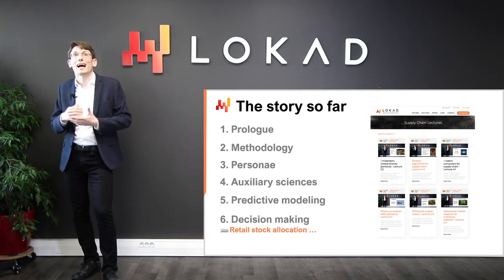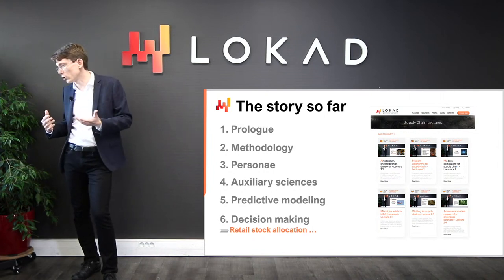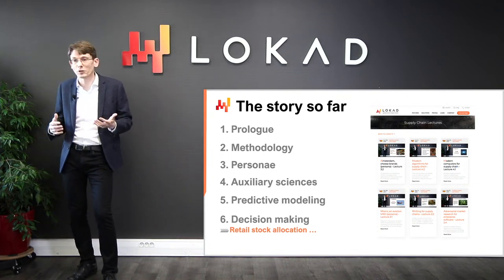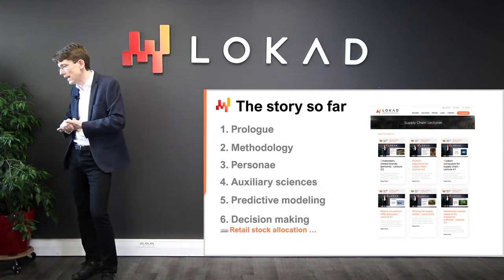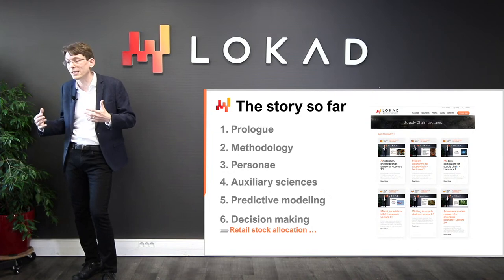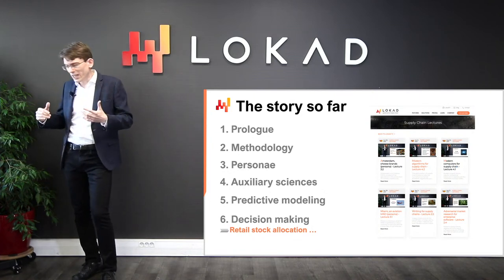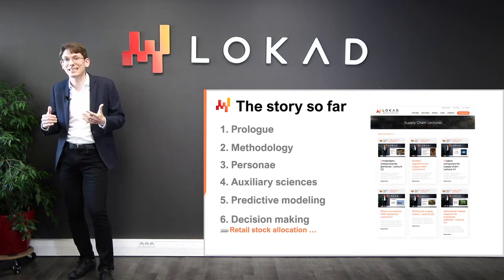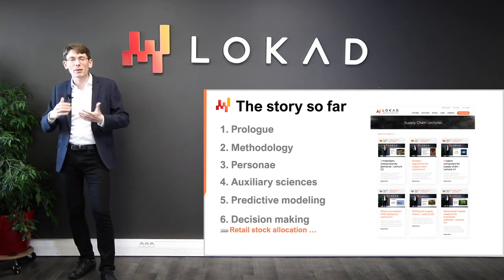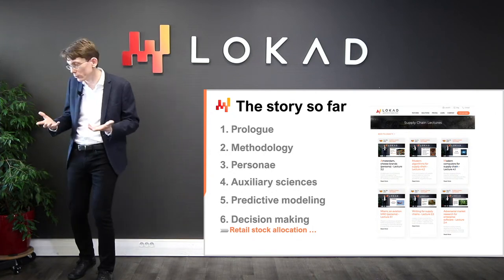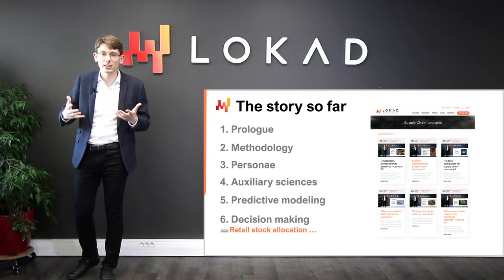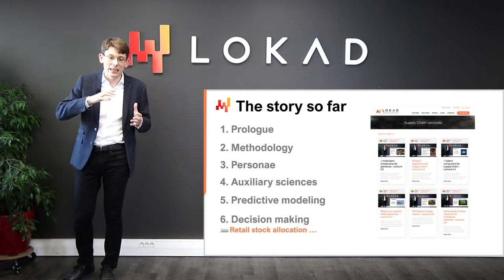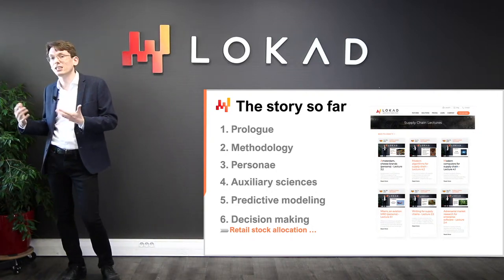The scientific literature has delivered over the last seven decades an overabundance of decision-making techniques and algorithms, from dynamic programming in the 1950s to reinforcement learning and even deep reinforcement learning. The challenge, however, is to achieve production-grade supply chain results. Most of those techniques suffer from hidden flaws that make them impractical for supply chain purposes, and today we focus on retail stock allocation as the archetype of a supply chain decision, paving the way for more complex decisions.